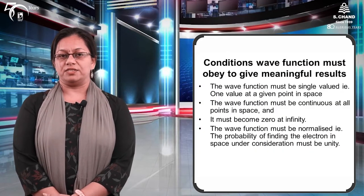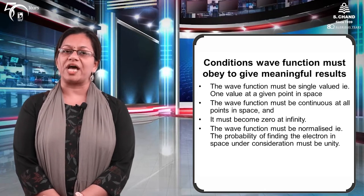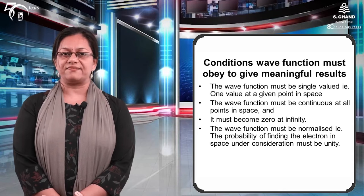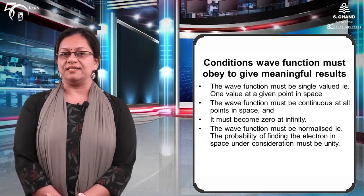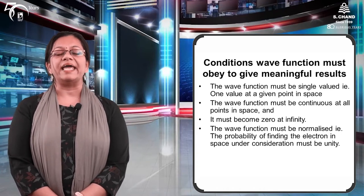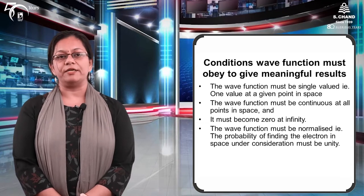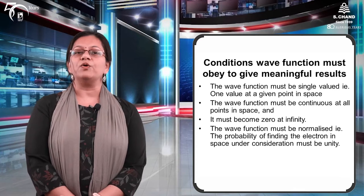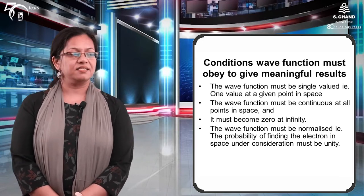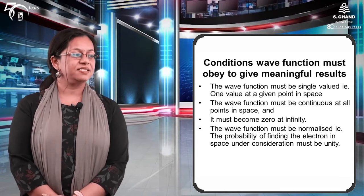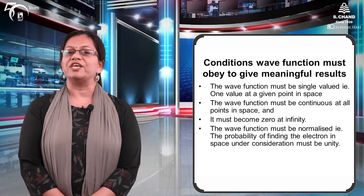Chi should satisfy some conditions to give meaningful results. First, chi should be single-valued — har point per chi ki ek fixed value honi chahiye. Second, it should be continuous at all points in space. Third, chi must be zero only at infinity. Fourth, the wave function must be normalized — the probability of finding the electron under the space under consideration must be unity.